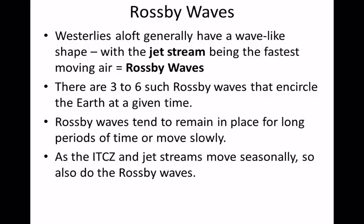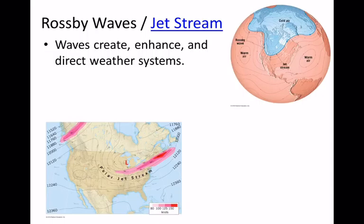You can have about three to six Rossby wave cycles going around the Earth at a given time. A Rossby wave — if this kink is a wave — is really big. It takes a long time to move on and a long time to form, so they kind of hang around for a while.